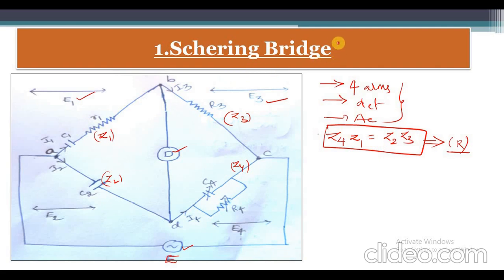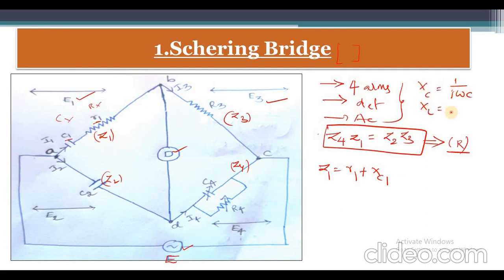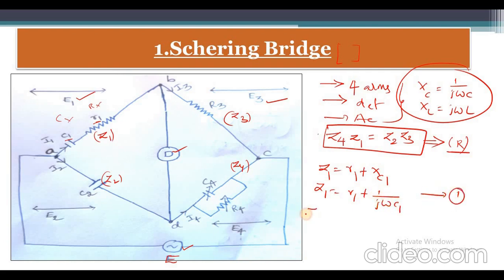The Schering Bridge is used to measure unknown capacitance. In its circuit diagram, we need to find C1 and R1 (also written as Cx and Rx). The Z1 equation: since C1 and R1 are connected in series, Z1 = R1 + (1/jωC1). Remember that inductive reactance XL = jωL and capacitive reactance XC = 1/jωC.